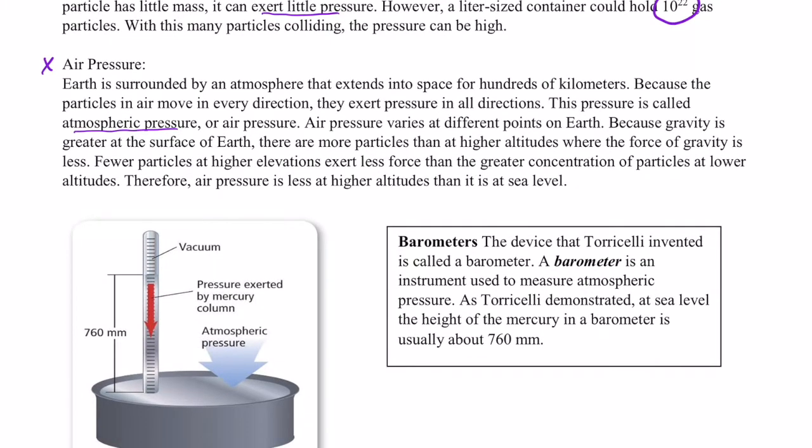Air pressure varies at different points on the Earth. Now that's because gravity is greater at the surface of the Earth. There are more particles than at higher altitudes, where the force of gravity is lower. Since there are fewer particles at higher elevation, the pressure is lower than where there's the greater concentration of particles at lower altitudes. And therefore the atmospheric pressure would be higher. So the bottom line is, air pressure is lower at high altitudes than it is at sea level.